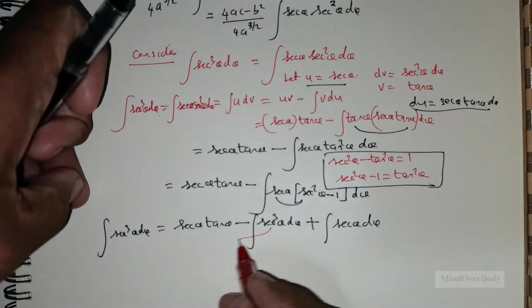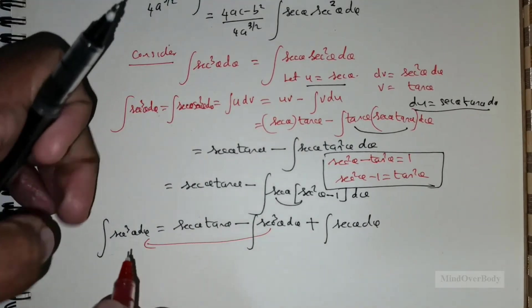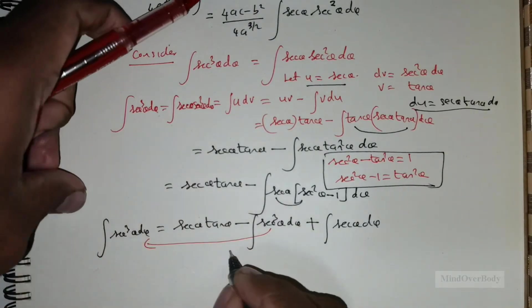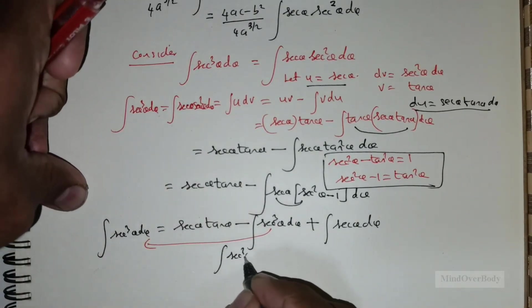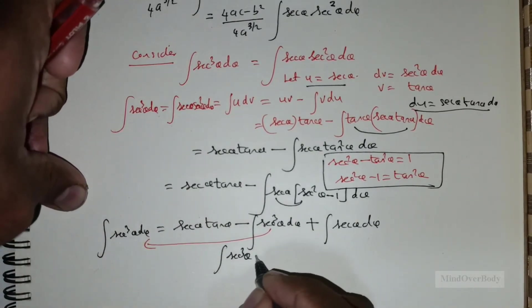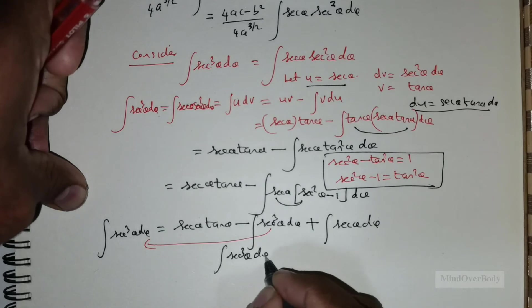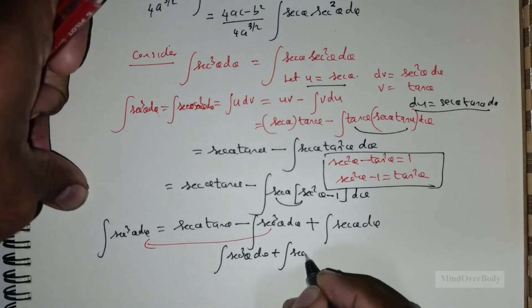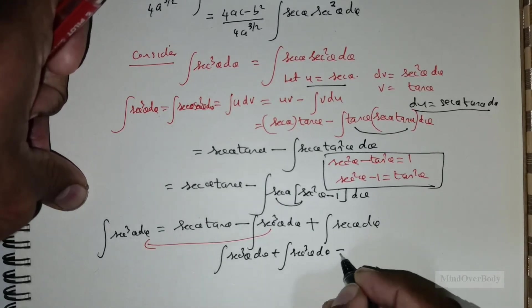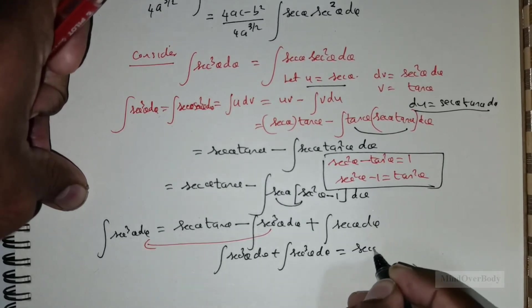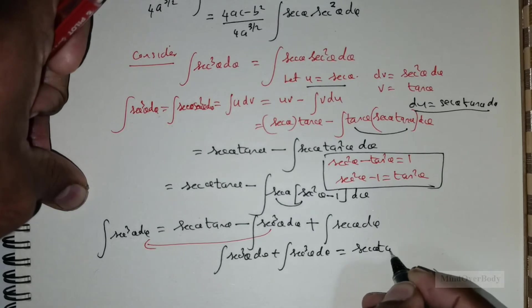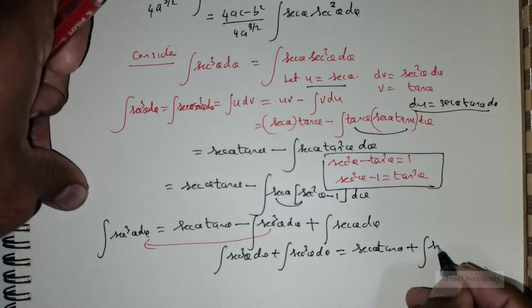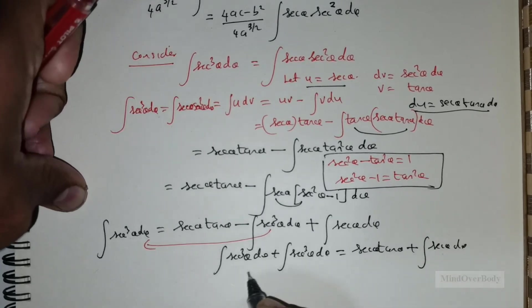The sec³θ term can be moved to the left side. So we have 2 times the integral of sec³θ dθ equals sec θ · tan θ plus the integral of sec θ dθ.